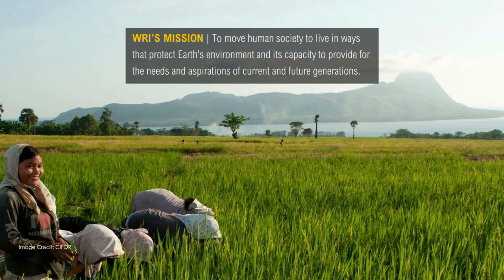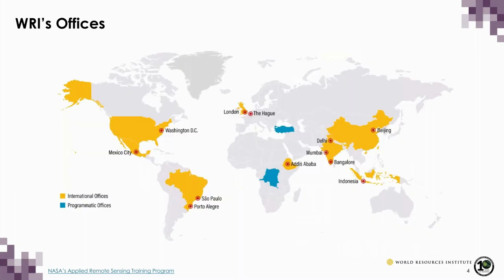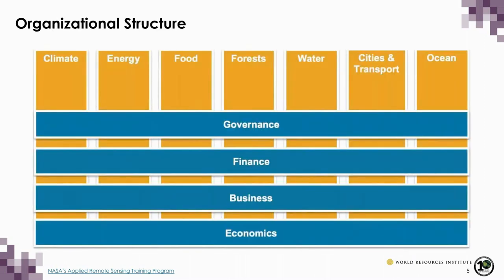WRI is a global environmental think tank. We try to think very broadly, tackle large issues, and create more sustainable change so that current and future generations can live a healthy and successful life. Our approach is generally to count it, change it, and scale it — doing research that leads to impactful and replicable change. We do that globally with international offices and programmatic offices around the world. All of our work is cross-sectional because real-world issues are cross-sectional, and we want to make sure we're looking at solutions that do that as well.